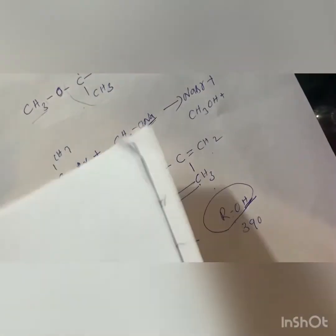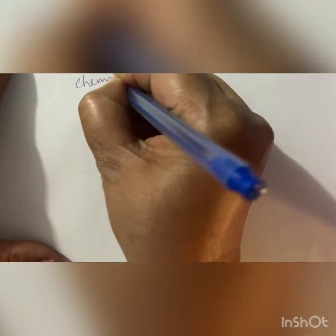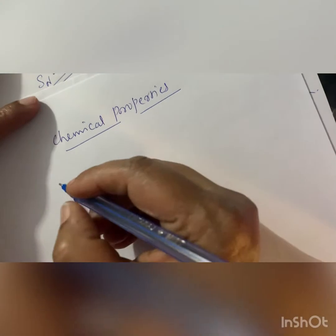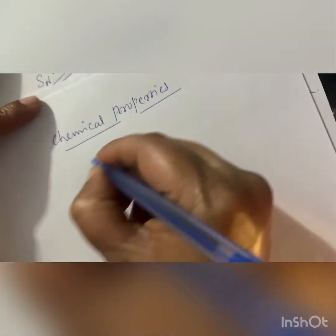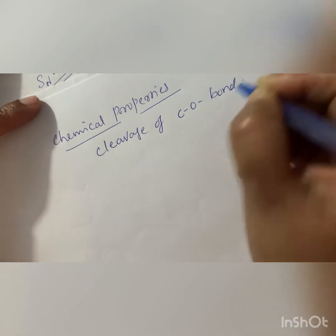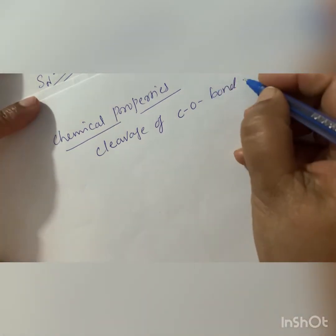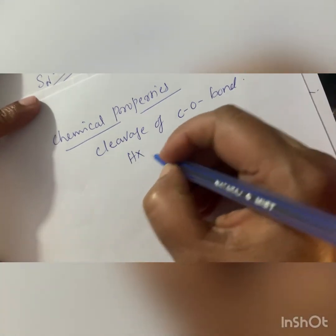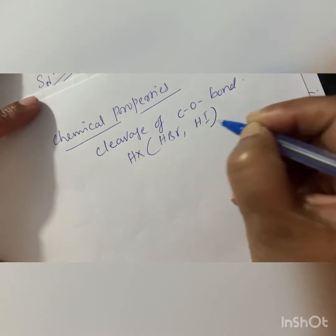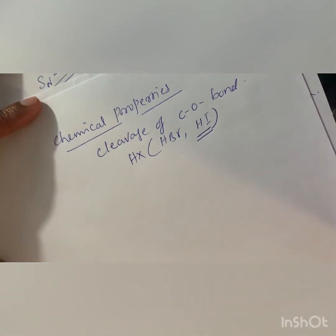Next are the chemical properties of ether. The first chemical property is cleavage of the C–O bond. Cleavage of the C–O bond takes place in the presence of HX (hydrogen halide). HX can be HBr or HI, and the reaction is fastest with HI. The reactivity order is: HI > HBr > HCl, and high temperature is also needed.